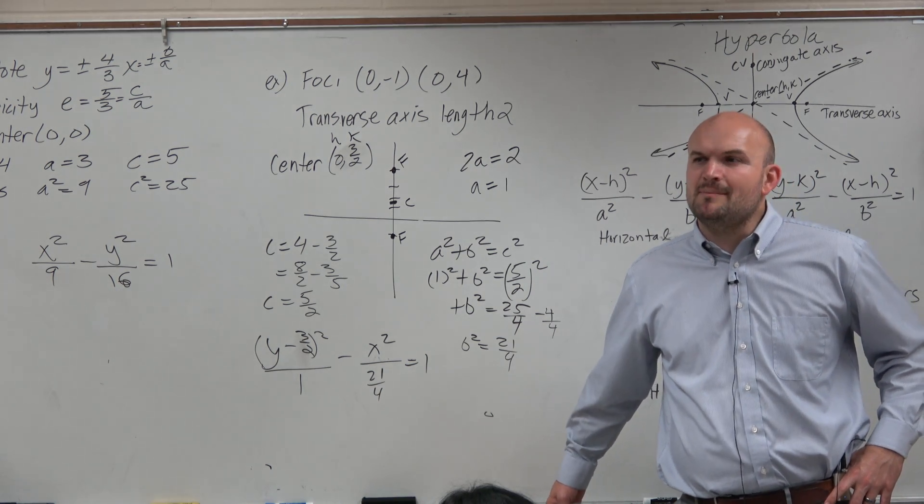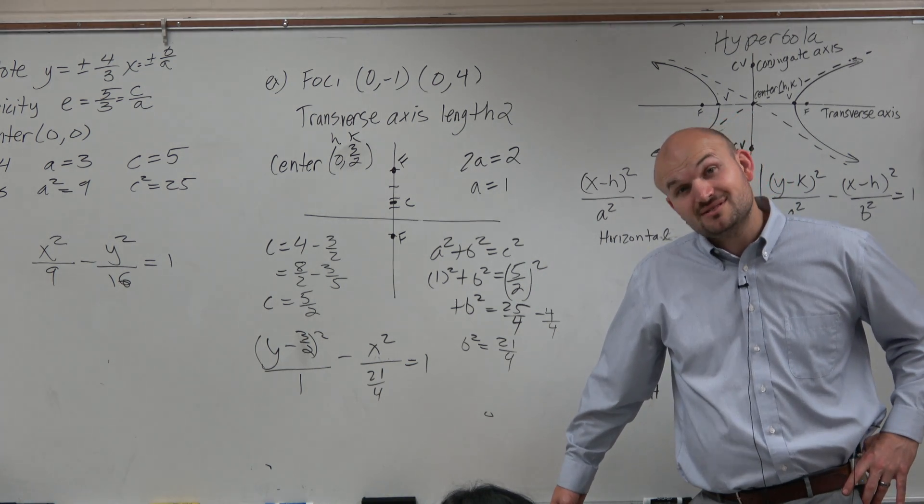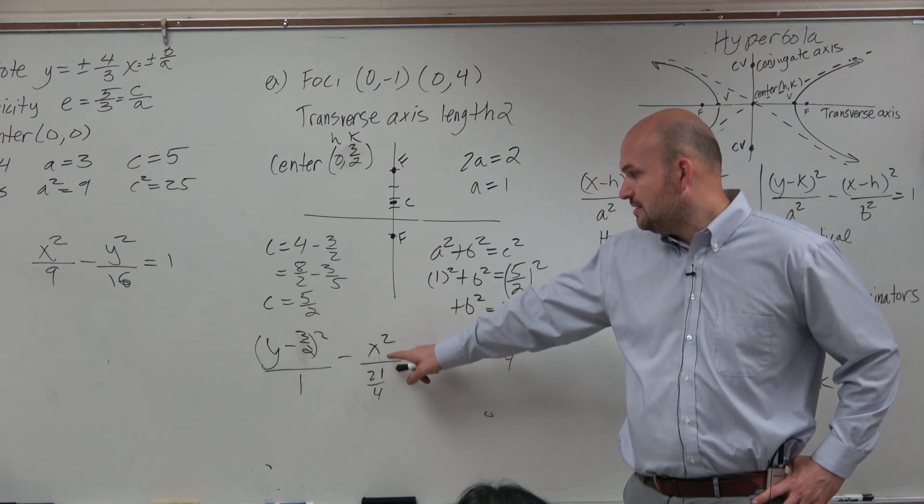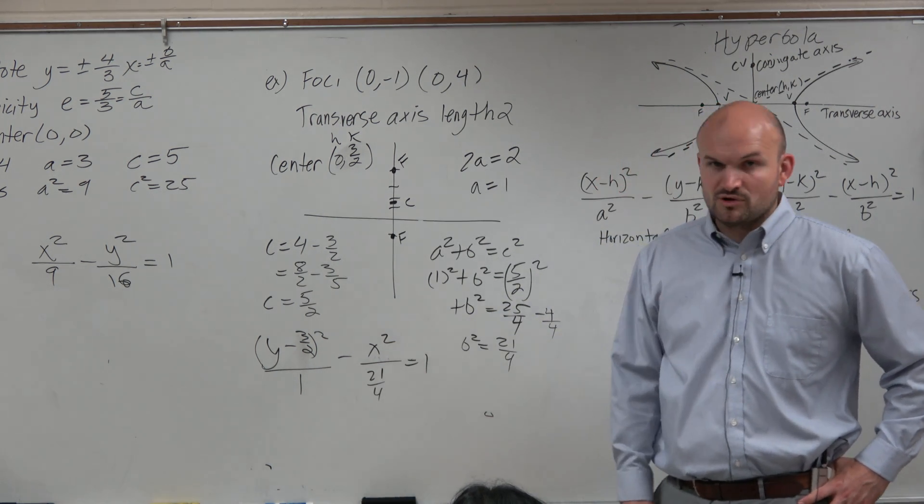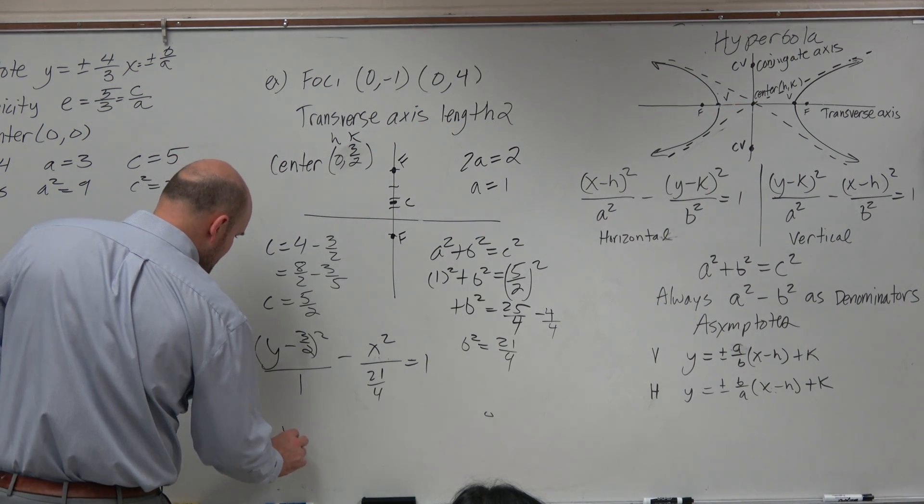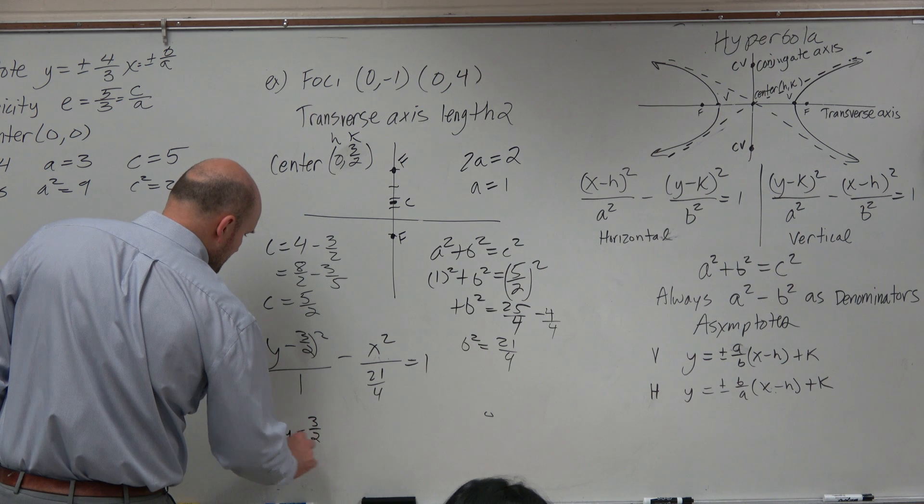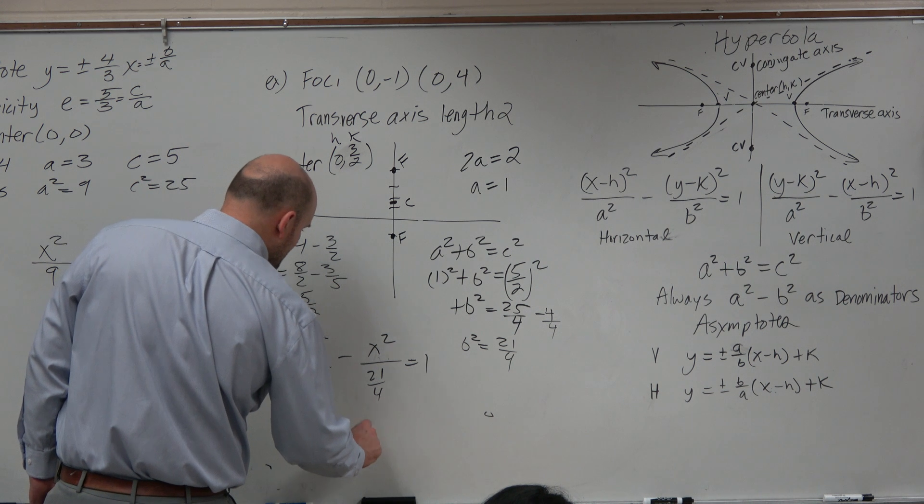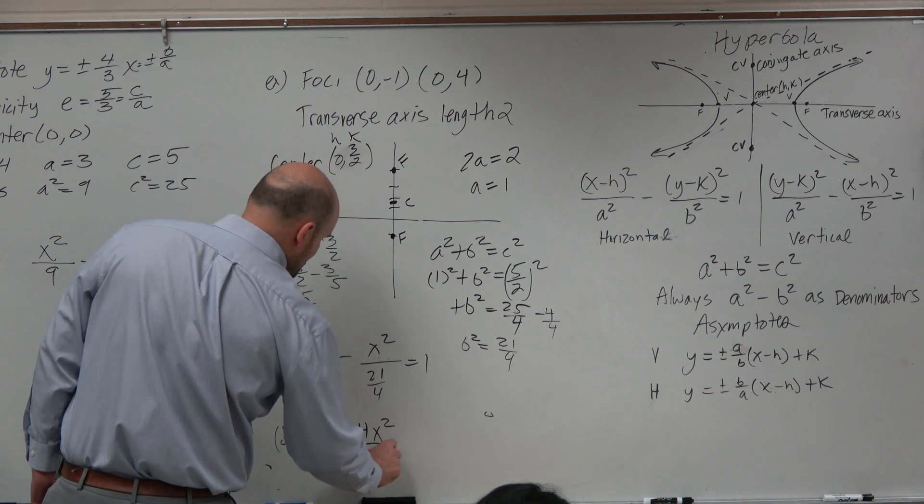So instead of dividing by 21 fourths, we could multiply this. We could multiply x squared by 4 21sts. And that actually gives us a better looking equation, which is more typical of what you would see on an exam.